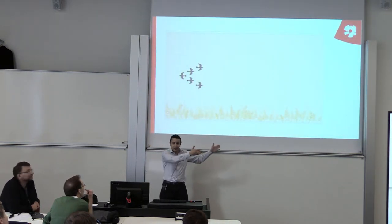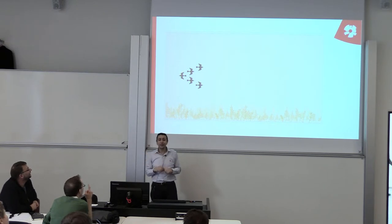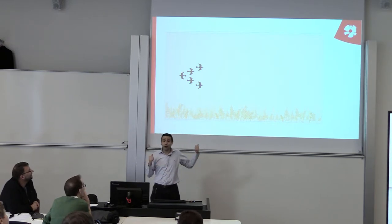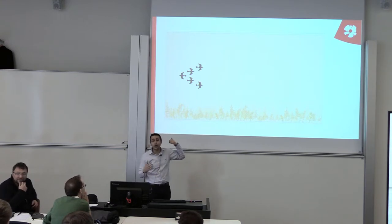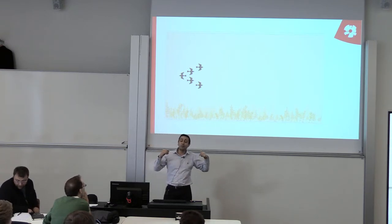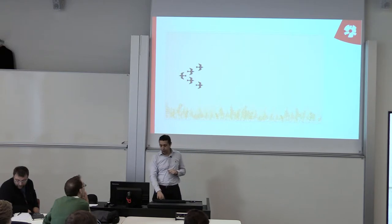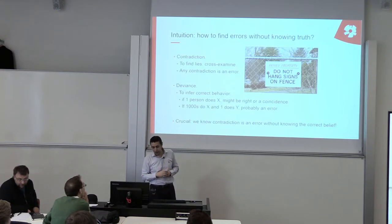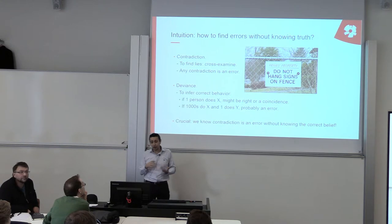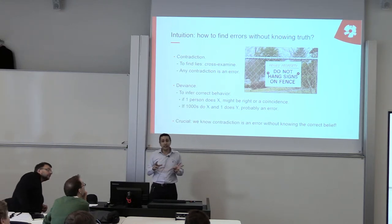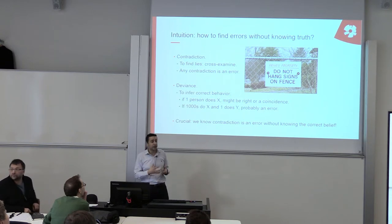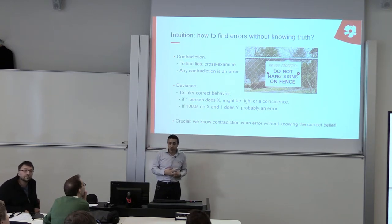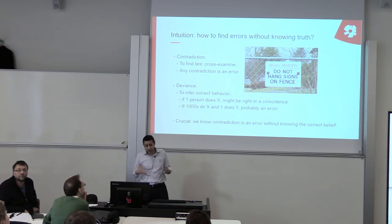If you understand this and you know how to discover this anomaly and this pattern, then you've almost understood this lecture. The intuition here is how to find errors without knowing the truth, and we base this on two main concepts: contradiction and deviance.